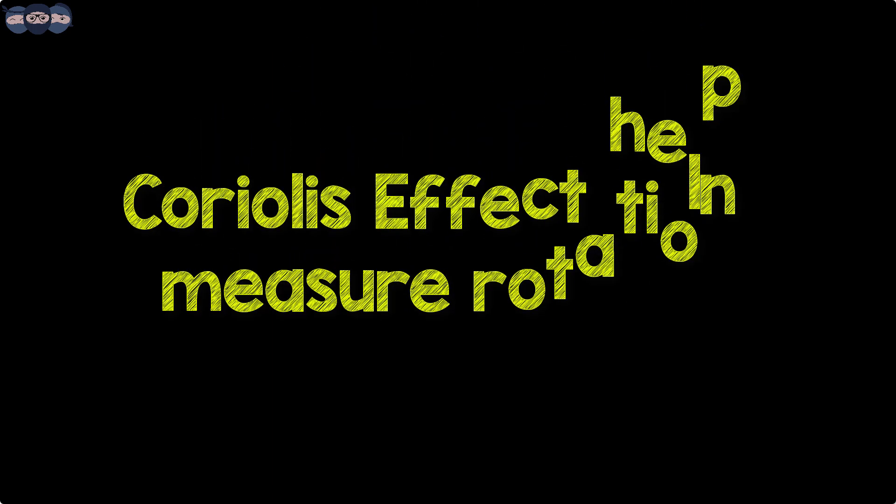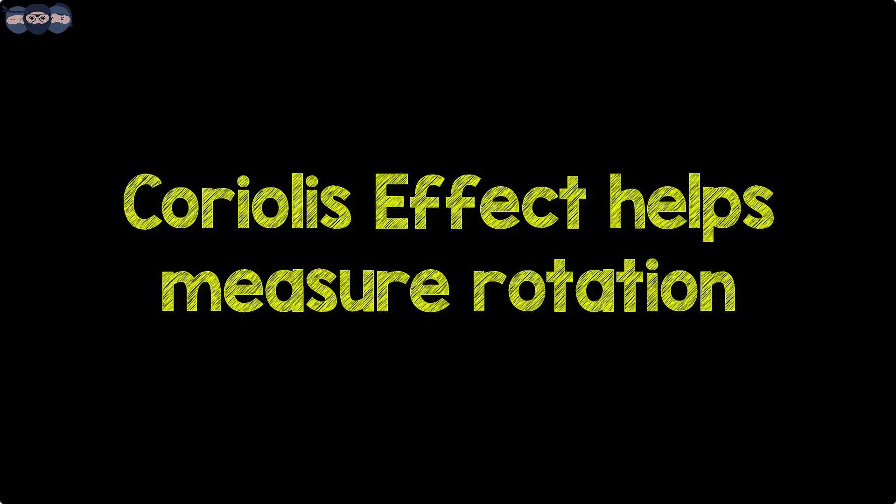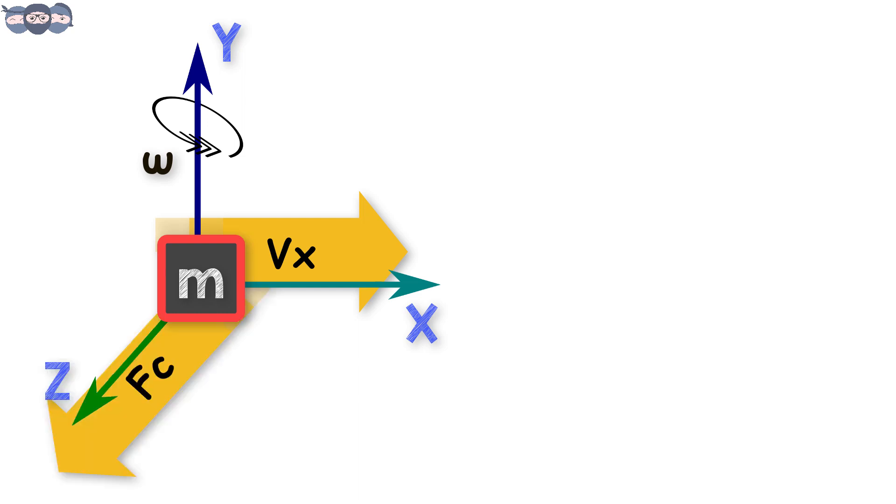The Coriolis force or the Coriolis effect helps one measure rotation or angular velocity. Consider a body of mass m as shown in the figure. It is moving in the x direction with velocity vx. Suppose an angular velocity omega acts on it in the y direction. Then, the body of mass m experiences Coriolis force.